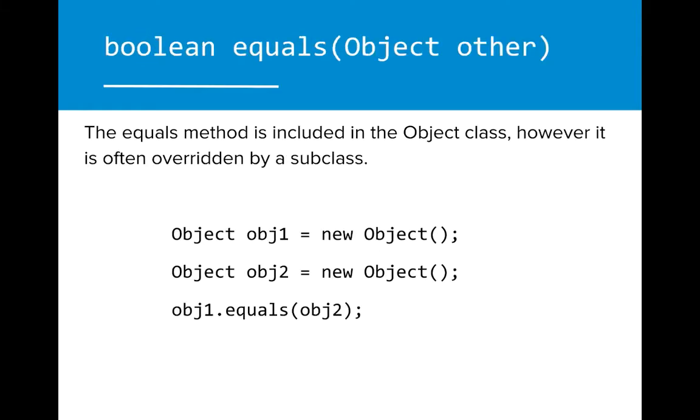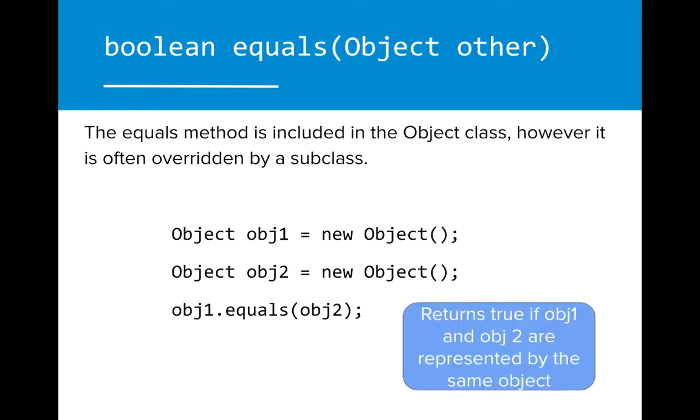The equals method compares two objects and is often overridden by a subclass. Using the object level version of the equals method, Java returns true only if the two objects are represented by the same object in memory. This is often not very helpful, which is why we see this method overwritten by subclasses.